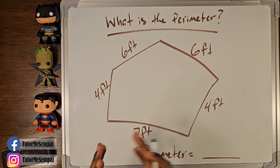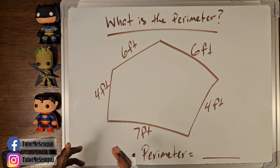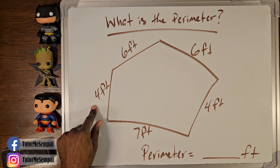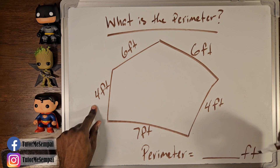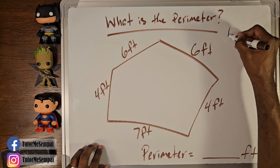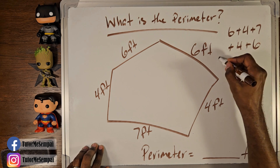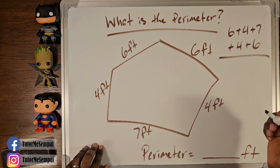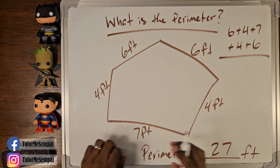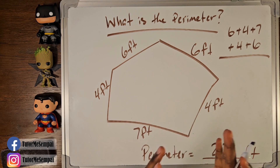And just to drive the point home, here we have a shape with a lot more sides than our first two shapes. What is the perimeter for this shape? Let's start with our units — we have feet. Here we have 6 plus 4 plus 7 plus 4 plus 6, which is going to be 27 feet. That's your perimeter. It doesn't matter how many sides you have — if they're all straight, all you're doing is adding up all your sides.